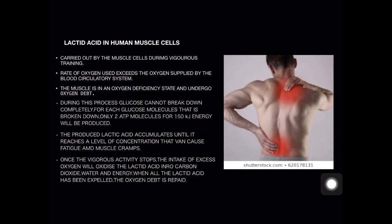Now we are going to learn about lactic acid in human muscle cells. This process is carried out by muscle cells during vigorous training. During vigorous training, the rate of oxygen used exceeds the oxygen supplied by the blood circulatory system, especially during workout or exercise. The muscle is in an oxygen-deficiency state, said to undergo oxygen debt. During this process, glucose cannot be broken down completely. For each glucose molecule broken down, only two ATP molecules or 150 kilojoules of energy will be produced.